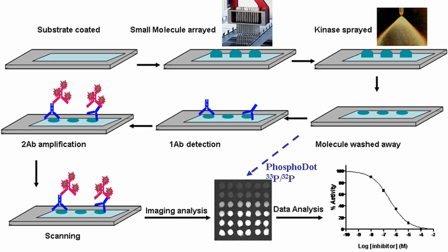A chemical compound microarray is a collection of organic chemical compounds spotted on a solid surface, such as glass and plastic. This microarray format is very similar to DNA microarray, protein microarray, and antibody microarray.